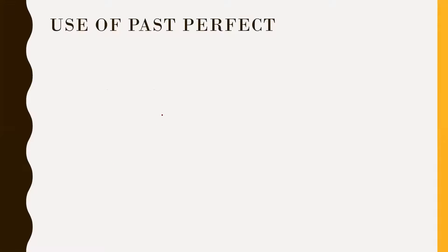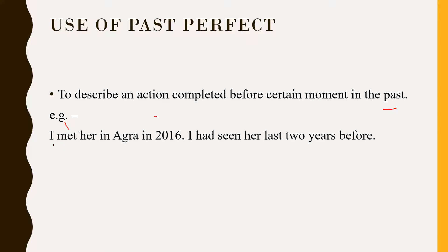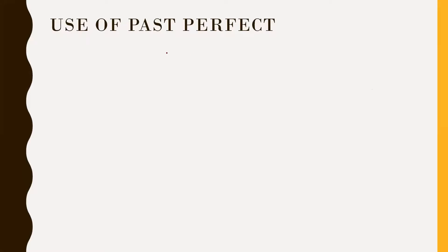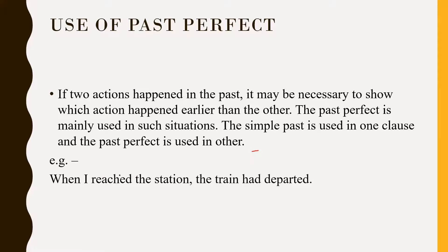Use of past perfect. First, to describe an action completed before a certain moment in the past. Example: 'I met her in Agra in 2016. I had seen her two years before.' Second, if two actions happened in the past, it may be necessary to show which action happened earlier. The past perfect is mainly used in such situations. The simple past is used in one clause and the past perfect in the other. Example: 'When I reached the station, the train had departed.'